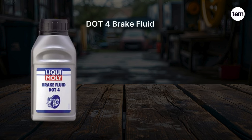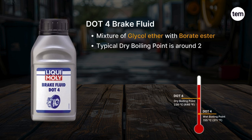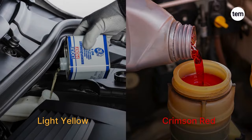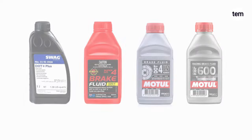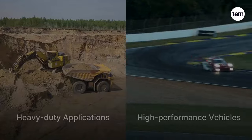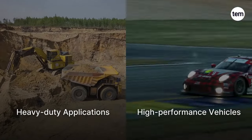DOT 4 brake fluid is a mixture of glycol-ether with borate ester. Its typical dry boiling point is around 230 degrees Celsius, and its wet boiling point is 155 degrees Celsius. DOT 4 absorbs moisture faster than DOT 3 and should be changed more regularly. It has a light yellow or crimson-red appearance. Different kinds of DOT 4 fluids include DOT 4+, DOT 4 Super, DOT 4 Low Viscosity, and DOT 4 Racing, each with different boiling points. It's suitable for heavy-duty applications and high-performance vehicles.